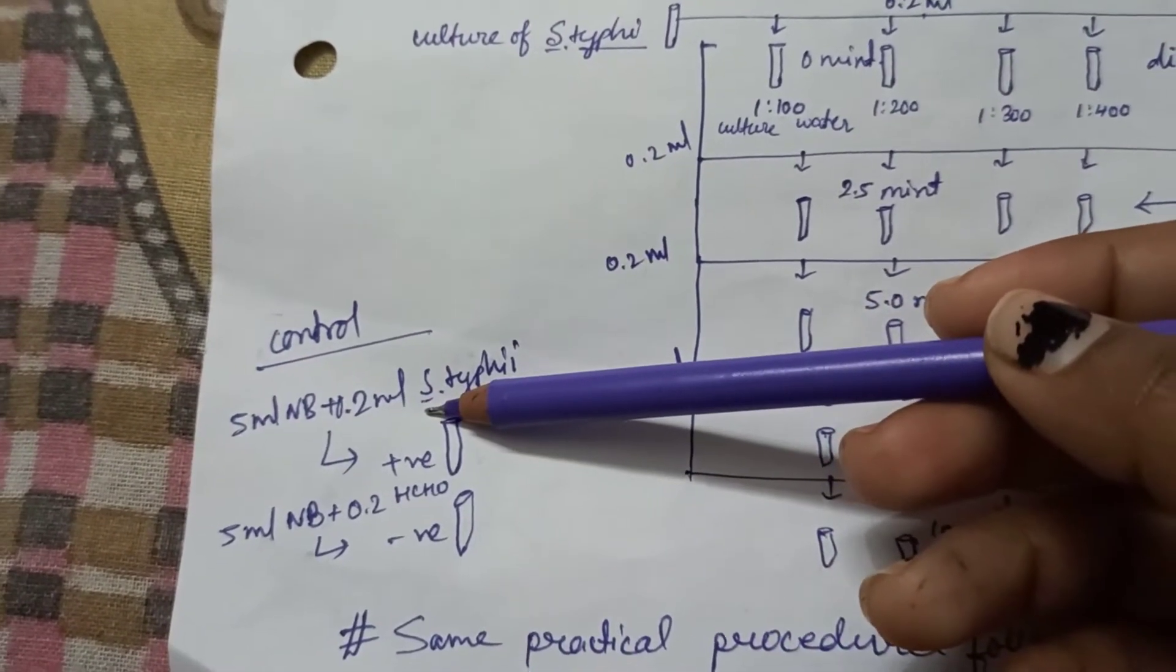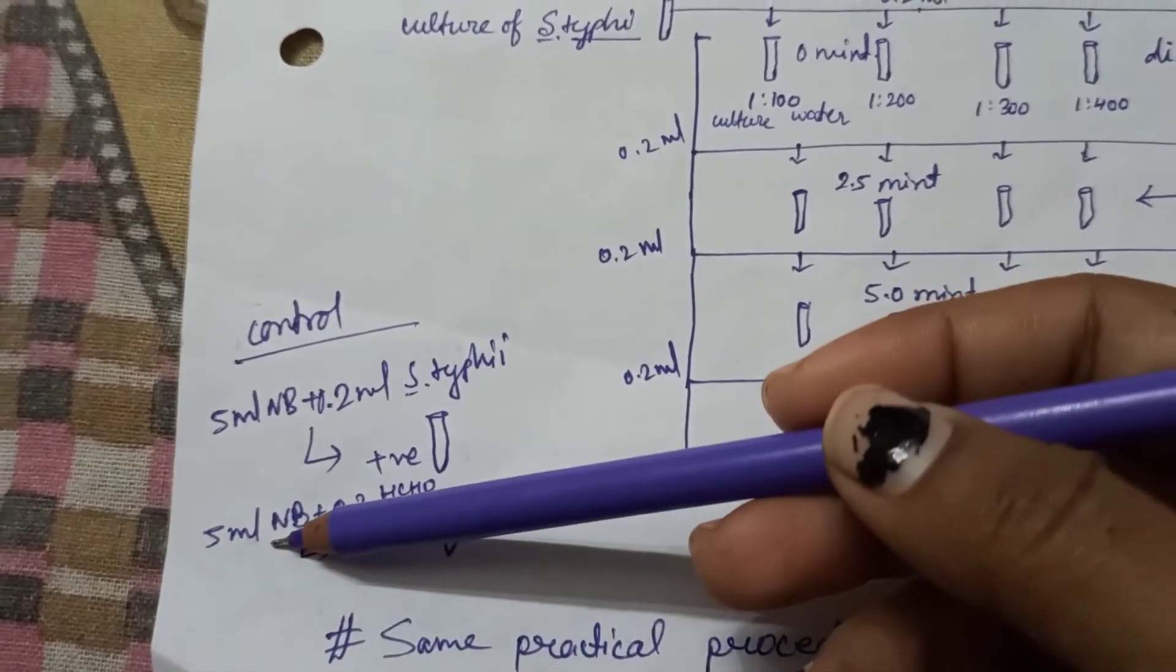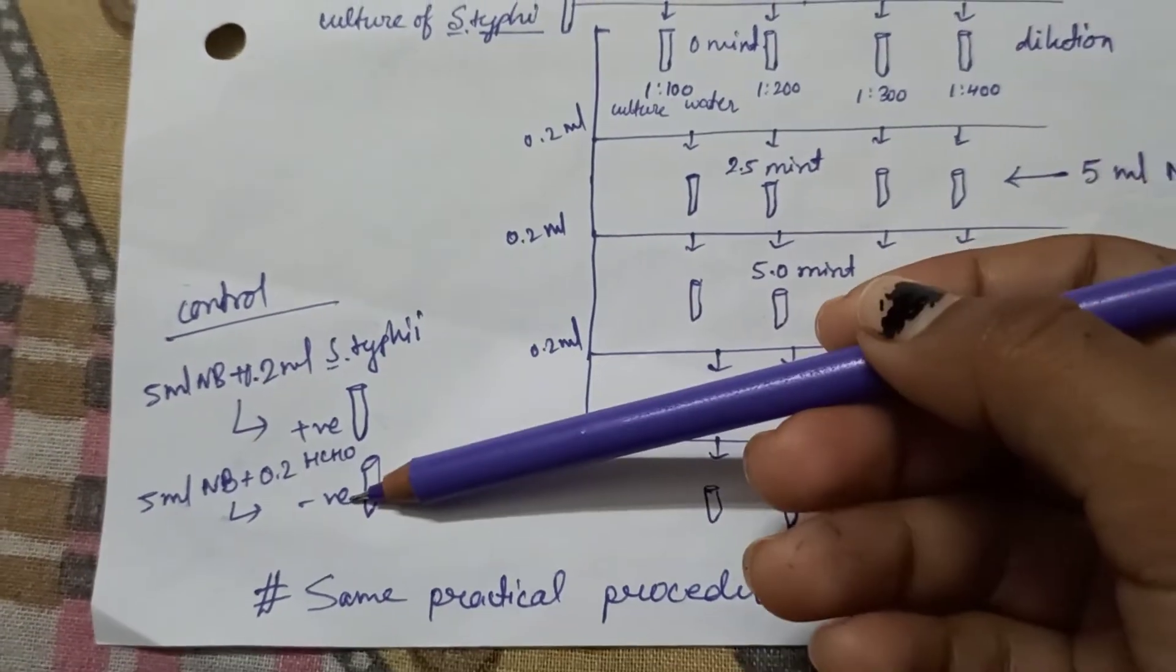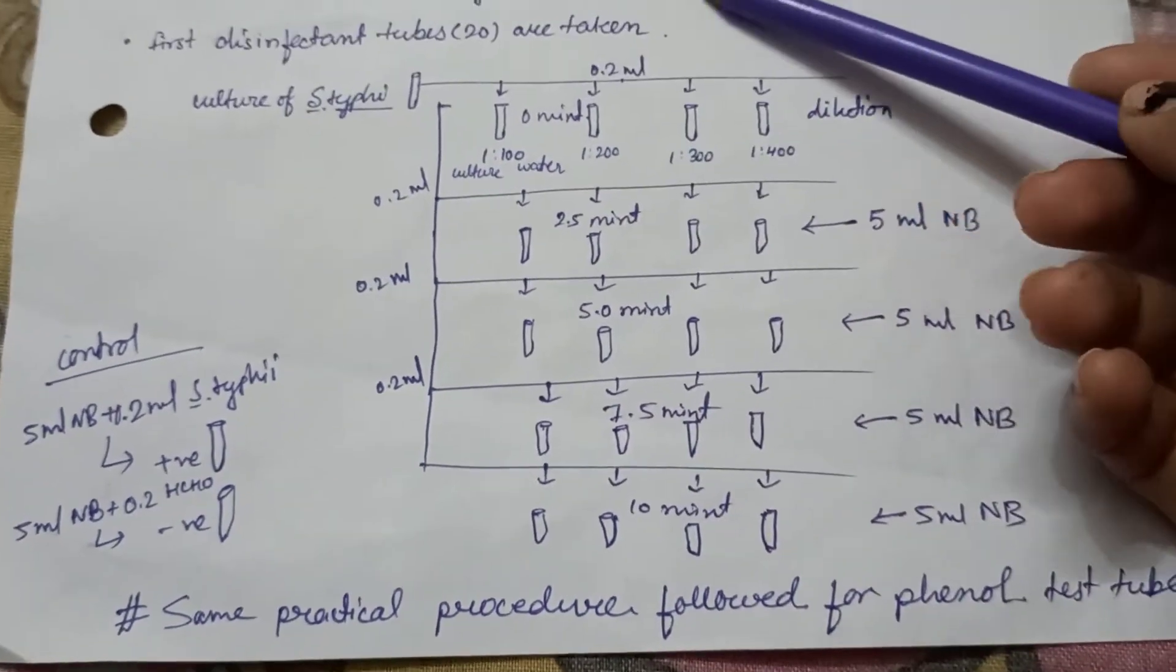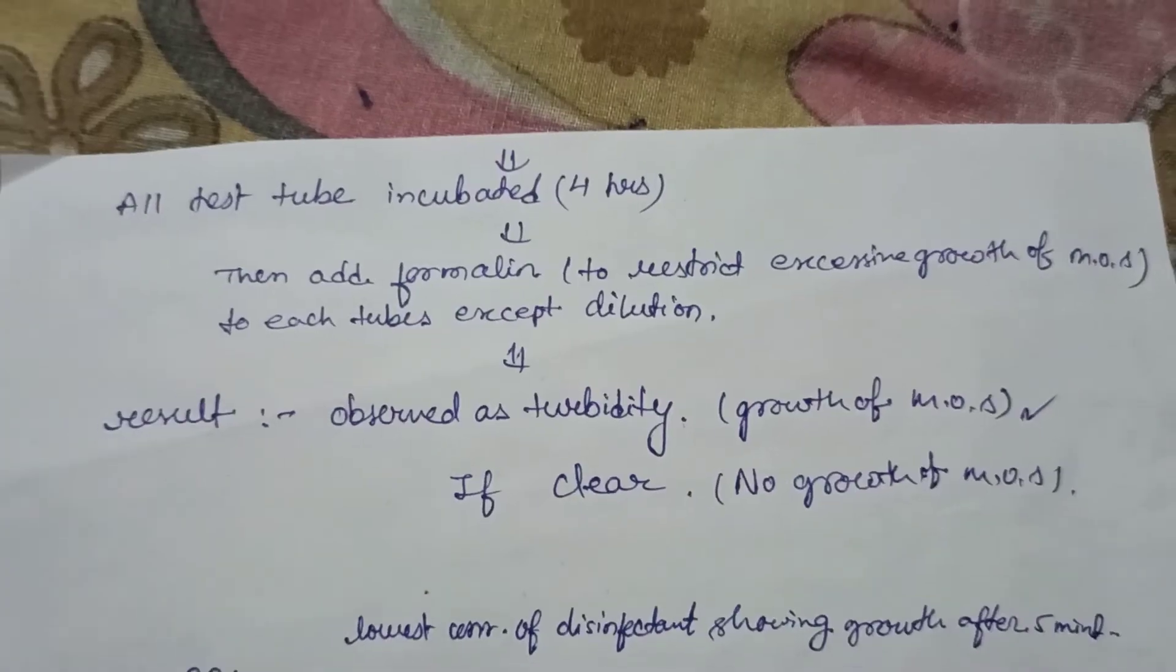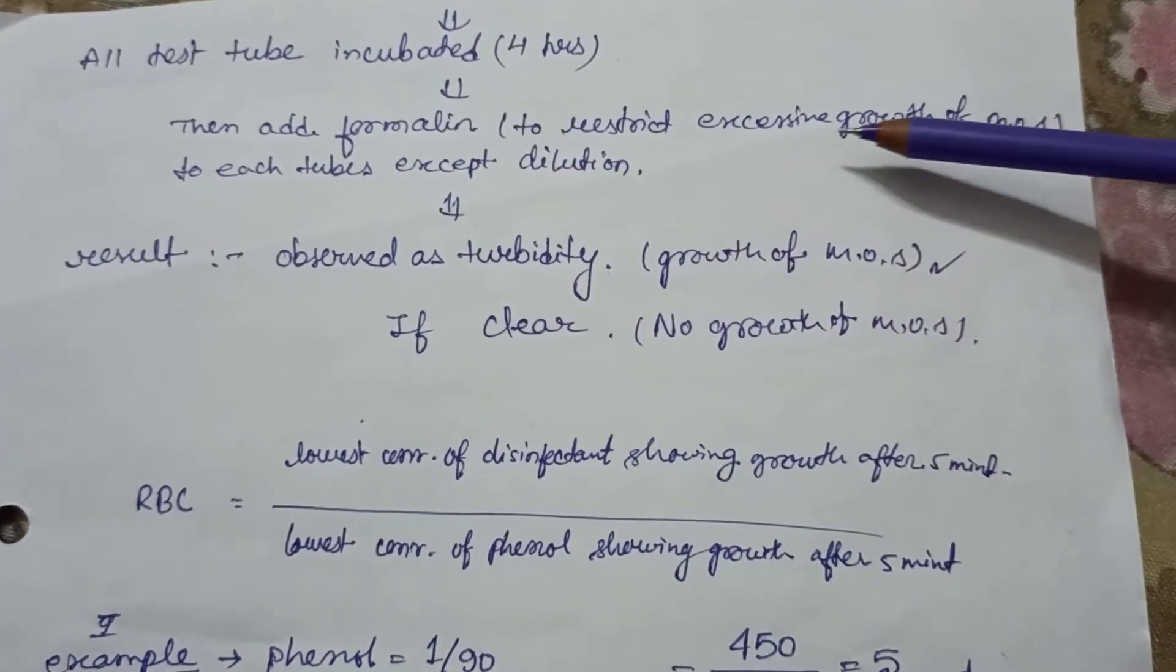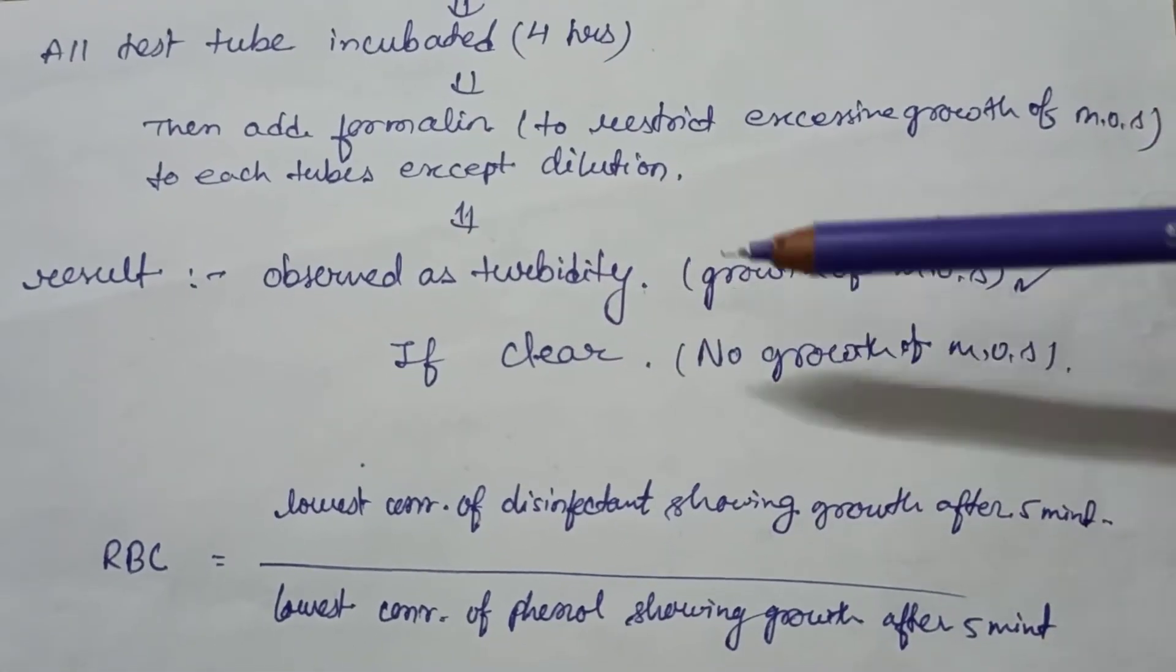To prepare positive control, we will take 5 ml of nutrient broth and 0.2 ml of Salmonella typhi. For the negative control, we take 5 ml of nutrient broth plus 0.2 ml of formaldehyde. Formaldehyde is taken to control the excessive growth of microorganisms. This same procedure is followed for the phenol test tubes. After that, all the test tubes are incubated for four hours.